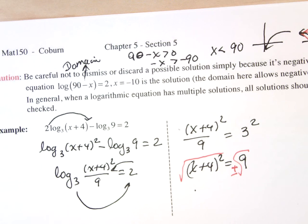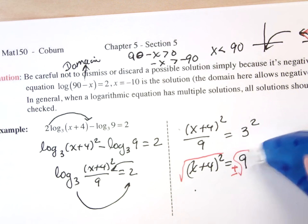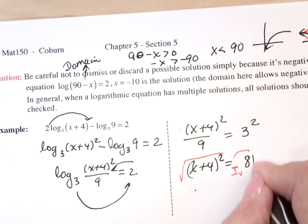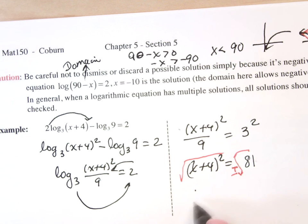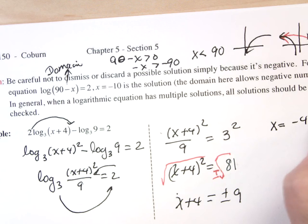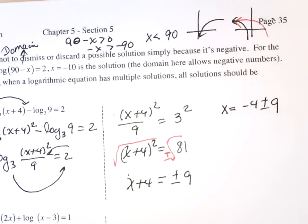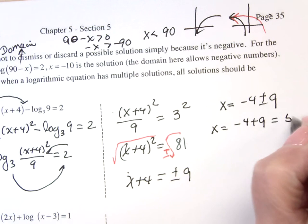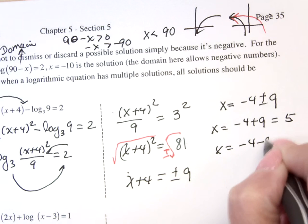I jumped ahead, which is something, by the way, you shouldn't do. I was focused too much on what we're going to do next and what we're doing now. Thank you. So that x+4 is plus or minus 9. So that x equals -4 plus or minus 9. x equals -4+9, which is 5. x equals -4-9, which is negative 13.